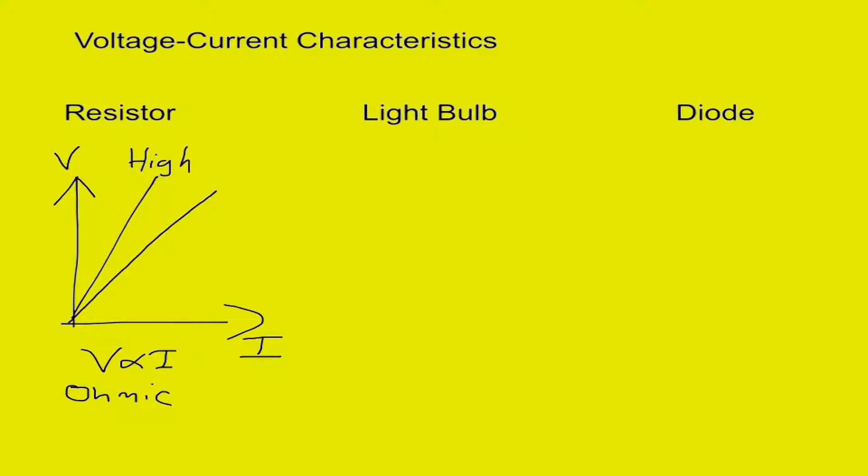So this is a higher value of resistance and a lower value of resistance would result in a shallower gradient. So that's a resistor.